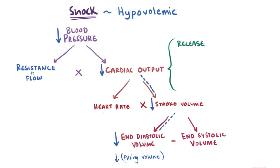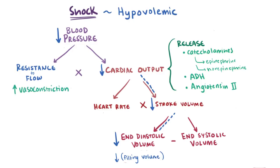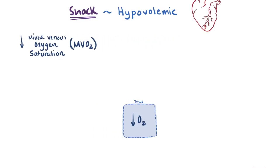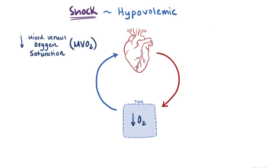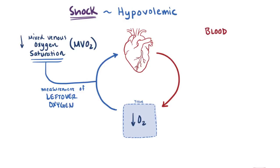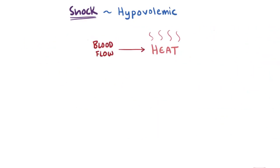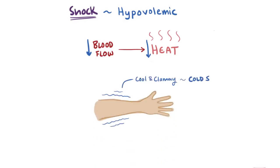When cardiac output goes down, catecholamines like epinephrine and norepinephrine, ADH, and angiotensin II are released, all of which cause vasoconstriction of blood vessels, which increases vascular resistance and increases heart rate, which increases cardiac output. These combined effects all increase blood pressure. A super important indicator of tissues not getting enough oxygen due to hypovolemia is a decreased mixed venous oxygen saturation, or MVO2 — the amount of oxygen bound to hemoglobin in blood coming to the right side of the heart from the tissues, representing the oxygen left over and not extracted by the tissues. Since blood volume is down, oxygen is down and there's less left over, so MVO2 will be down with hypovolemic shock. Since blood flow also provides heat to the tissues, when it's reduced the skin starts to feel cool and clammy, and so hypovolemic shock is considered a cold shock.